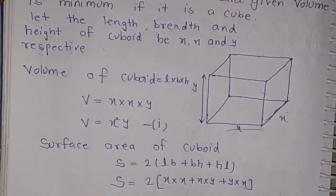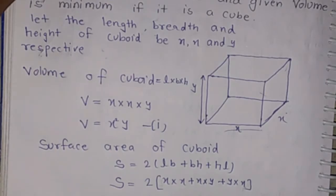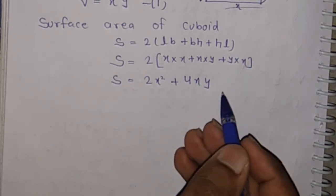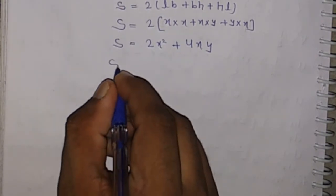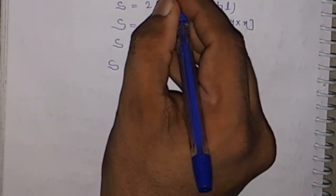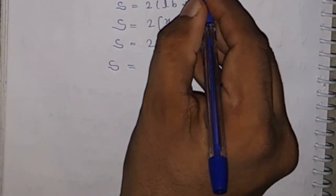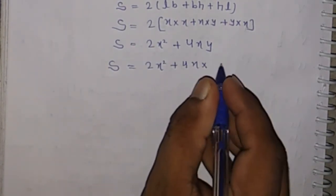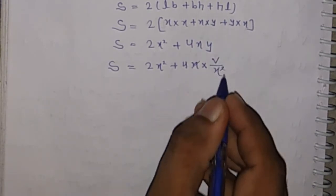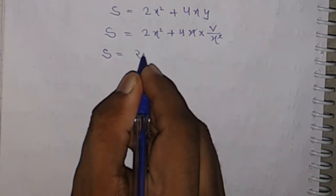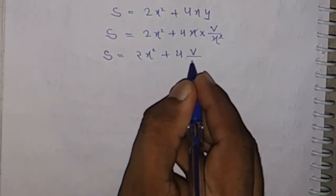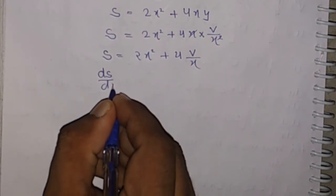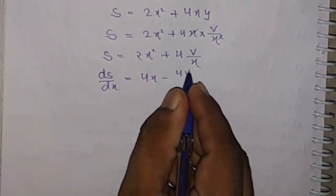Since we have to show that the surface area is minimum, we differentiate this term. Before differentiating with respect to x, we change the variable y in terms of x. The value of y in terms of x is given by V divided by x squared. So S equals 2x squared plus 4x into (V by x squared), giving S equals 2x squared plus 4V by x.